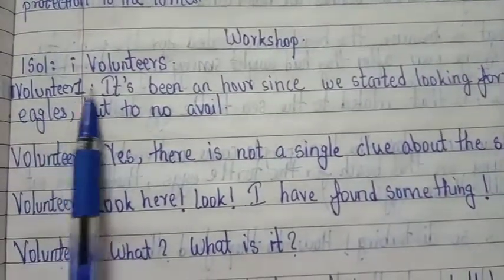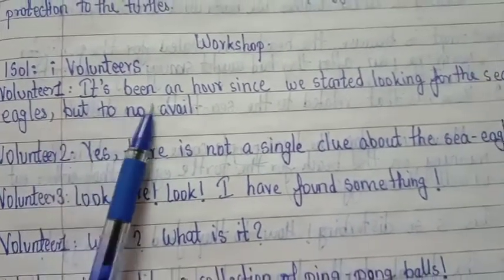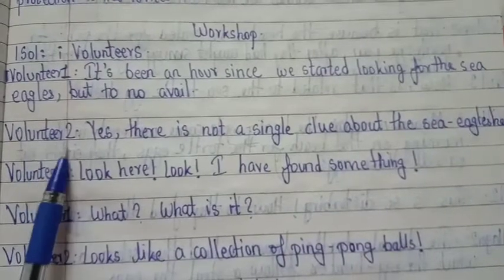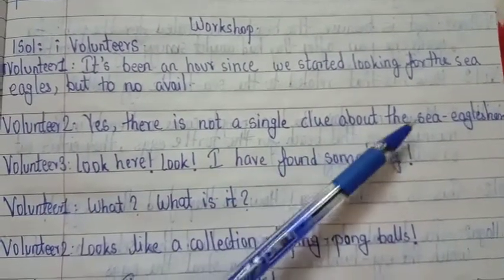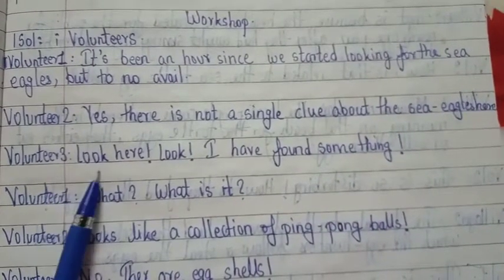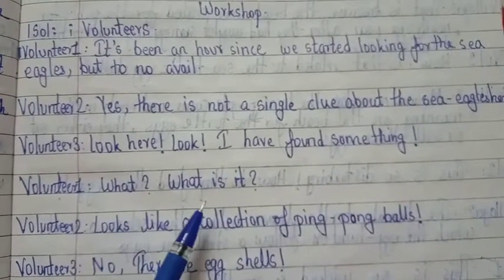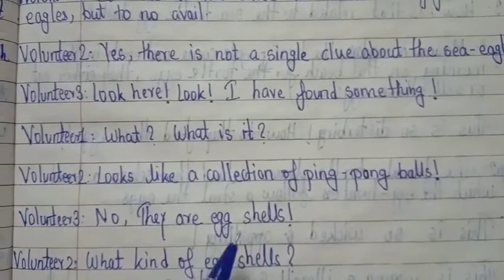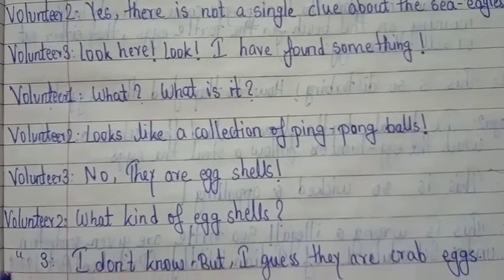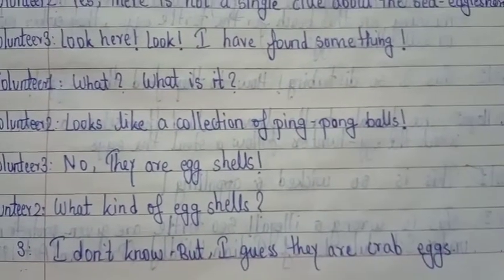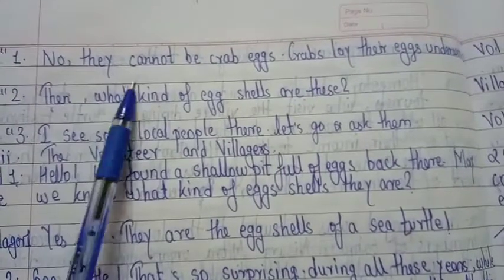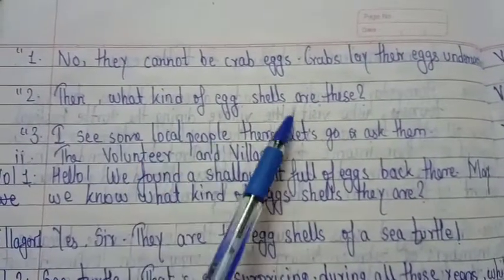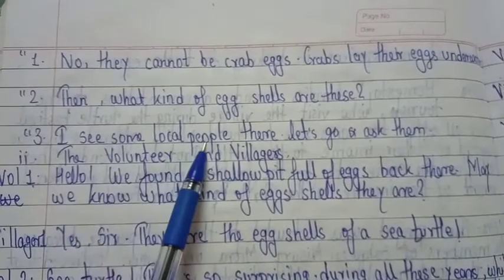So the answer — Volunteer 1: 'It's been an hour since we started looking for the sea eggs but to no avail.' Volunteer 2: 'Yes, there is not a single clue about the sea eggs here.' Volunteer 3: 'Look here! I have found something.' Volunteer 1: 'What is it?' Volunteer 2: 'Looks like a collection of ping pong balls.' Volunteer 3: 'No, they are egg shells.' Volunteer 2: 'What kind of egg shells?' Volunteer 3: 'I don't know but I guess they are crab eggs.' Volunteer 1: 'No, they cannot be crab eggs — crabs lay their eggs underwater.'